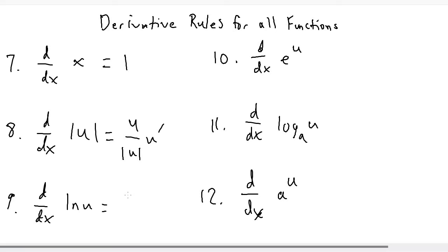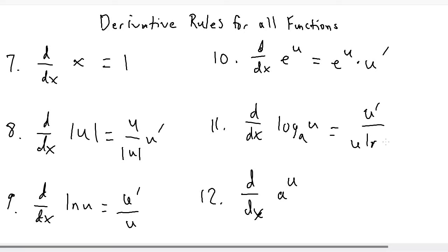The derivative of natural log u is just u prime over u. The derivative of e to the u is e to the u times u prime. The derivative of log base a of u is u prime over u times the natural log of a. And the derivative of a to the u is a to the u times the natural log of a times u prime.